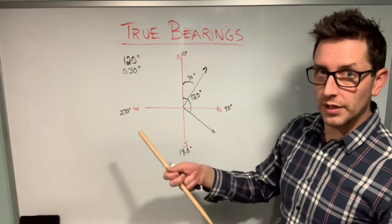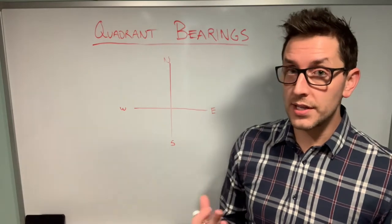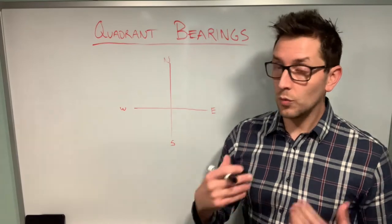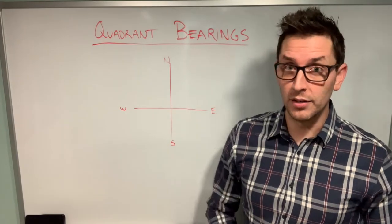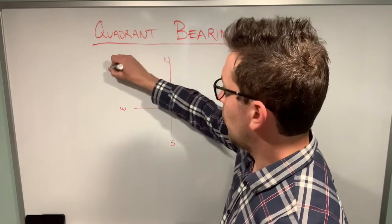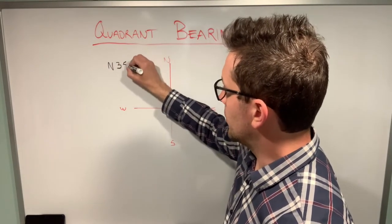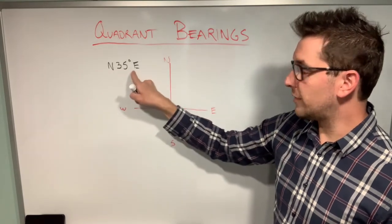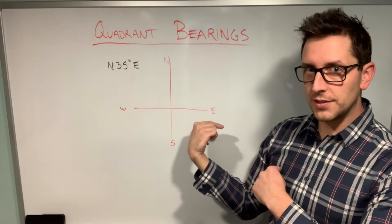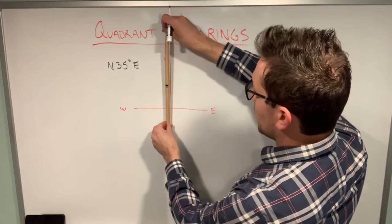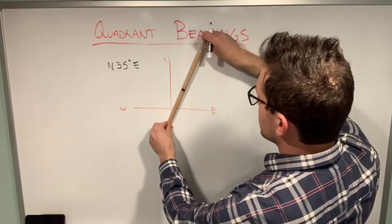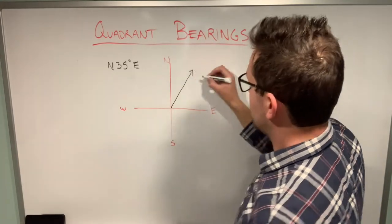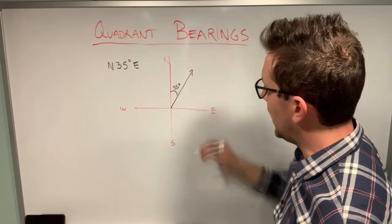Quadrant bearings are similar to true bearings, but instead of drawing vectors with respect to the northern axis, we draw them with respect to whichever directions we're given. For example, the quadrant bearing N35°E tells us to start in the direction of north and travel 35 degrees toward the east. So I start on the northern axis, rotate 35 degrees in the eastward direction — remember, we always go clockwise — and the vector looks something like this.